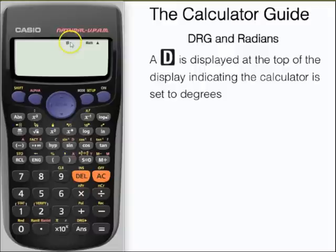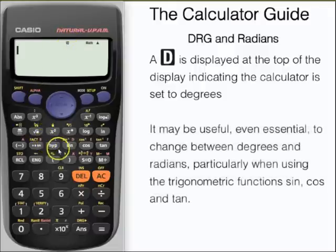At the moment it's in degrees, we can see a little D displayed here at the top. Now it can be useful and sometimes essential in some questions to change from degrees to radians, particularly with the trigonometric functions sine, cosine, and tangent.